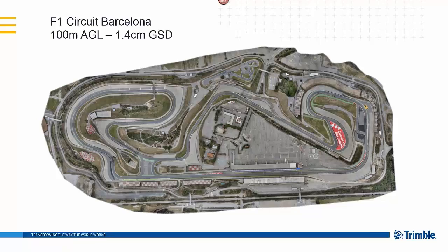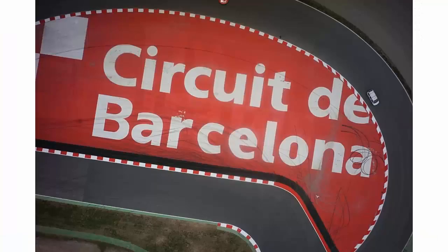Here's an example: a flight conducted in Barcelona of an F1 racing circuit at 100-meter ground level at 1.4-centimeter ground sample distance. You can see the entire orthomosaic is very good quality. Zooming in from that level illustrates how great a resolution you can expect. We can zoom in further — there's actually a person standing on the side of that track visible from that 100-meter flight height. As they say, a picture's worth 1,000 words, and these speak for themselves.